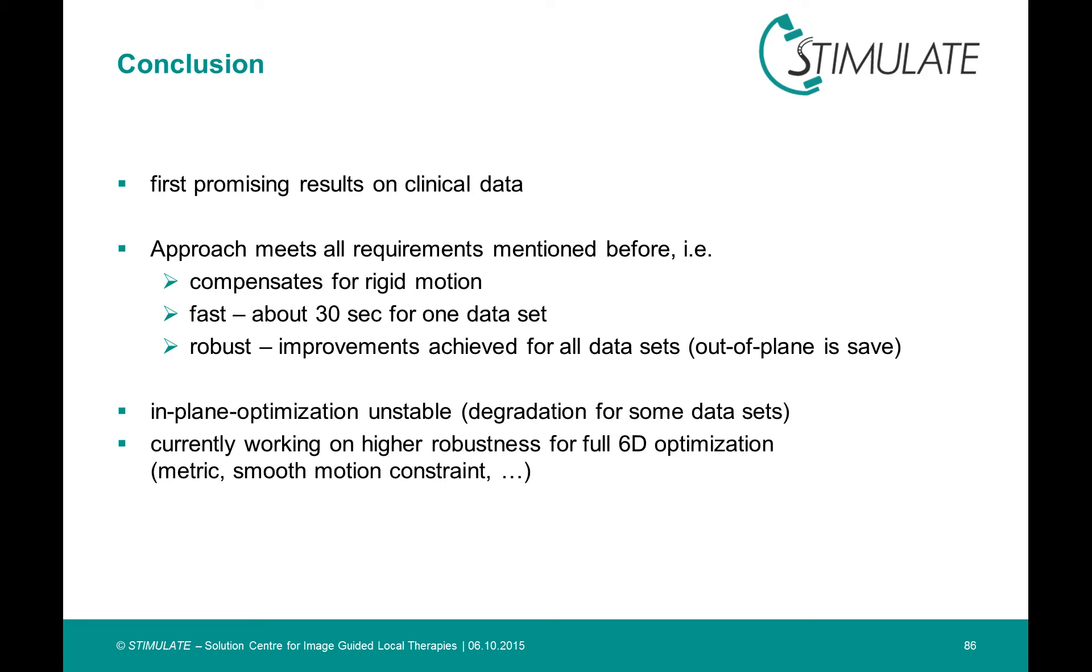The in-plane optimization is not robust for all datasets when using the simple optimization approach with the angle by angle scheme. But we are currently working on a higher robustness for the in-plane optimization by modifying the matrix and incorporating smoothness constraints and so on. Also the influence of other image artifacts, for example beam hardening and truncation, will be subject of future work.